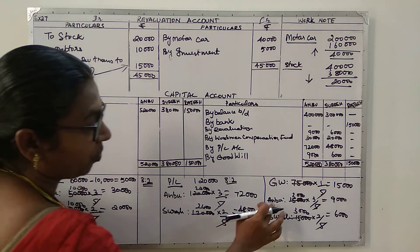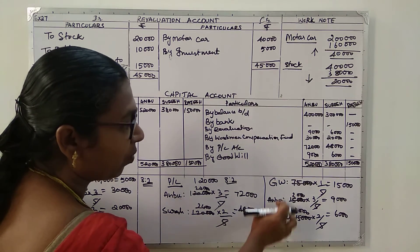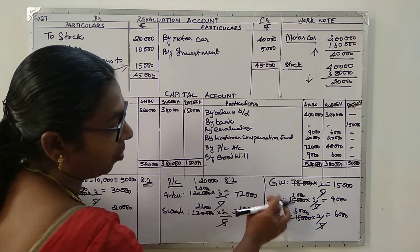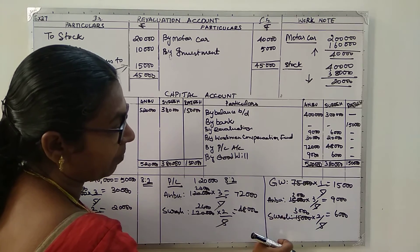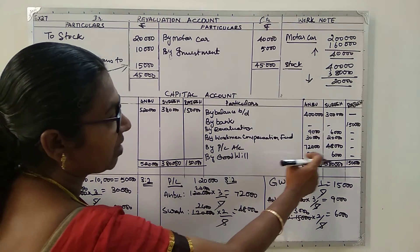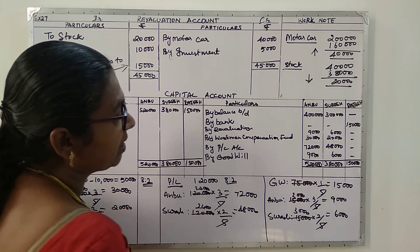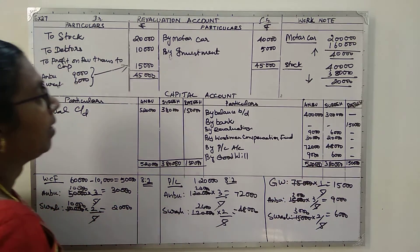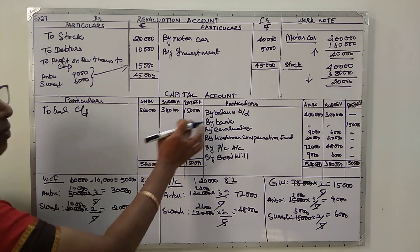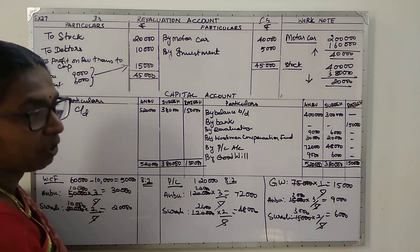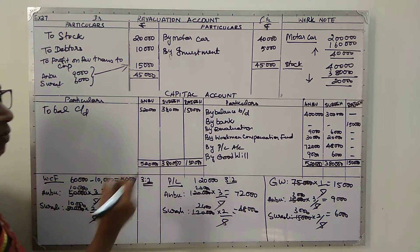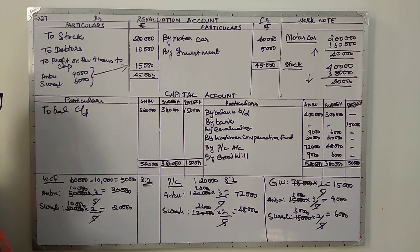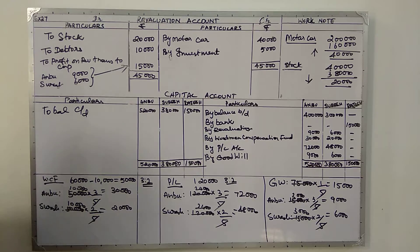The sacrificing ratio is the same as the old sharing ratio, which is why goodwill is shared as nine thousand and six thousand. This is the amount that will go into the new balance sheet. Next, we are going to prepare the new balance sheet.